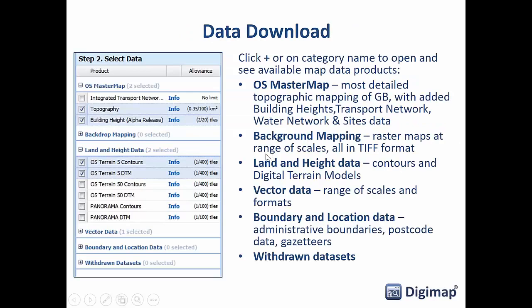In the basket you have all the different options for selecting format, and the format is the most important element when choosing data for use in QGIS. When you've got the side panel open, you can click on the info links to see what formats the data are available in and some sample uses. You need to click on the category names to open them up. For Ordnance Survey, background mapping is all GeoTIFFs; land and height is where you go for digital terrain models and contours. Vector data comes in a range of different scales and formats, and there's boundary and location data like administrative boundaries, postcode boundaries, and gazetteers.